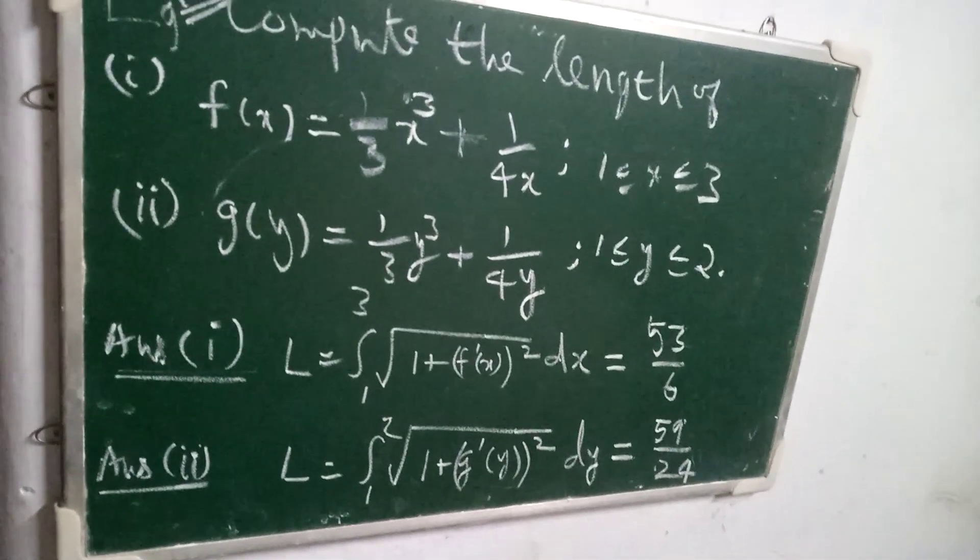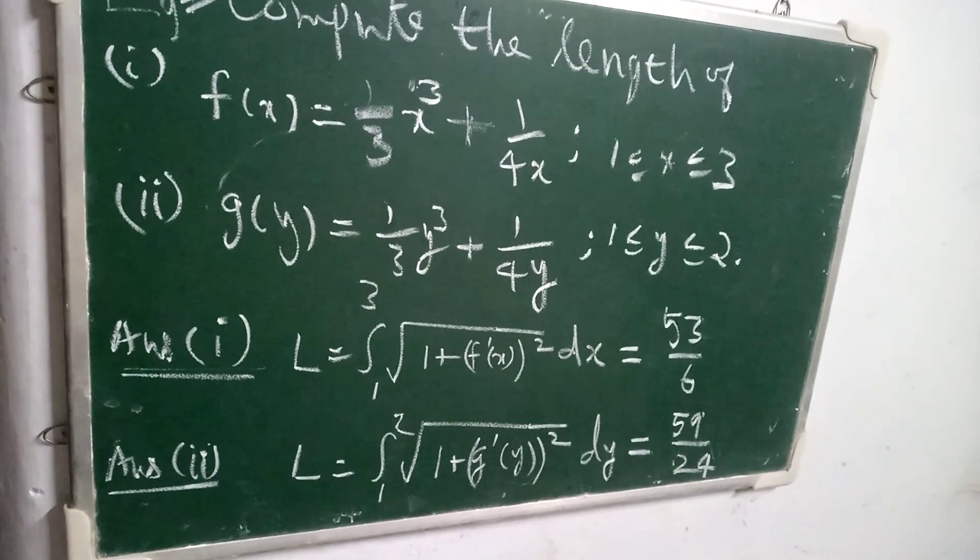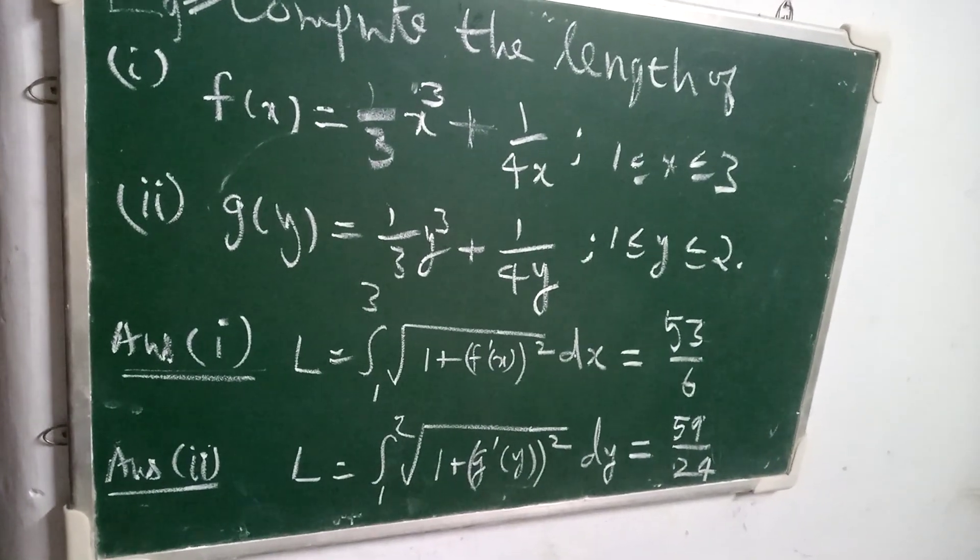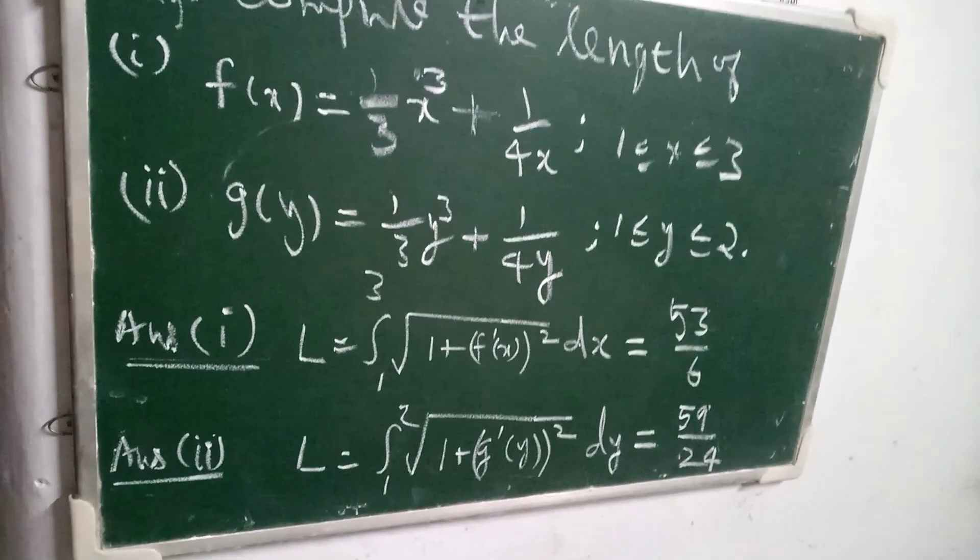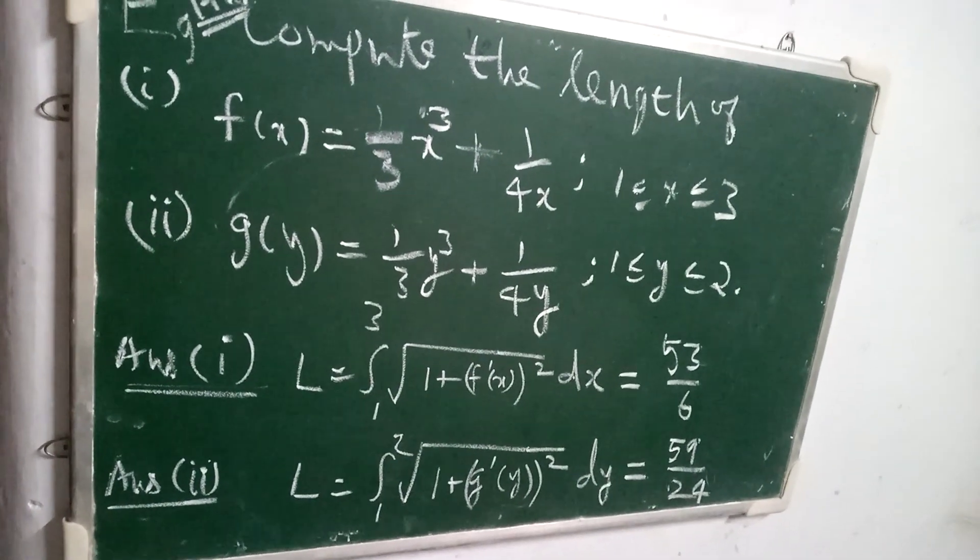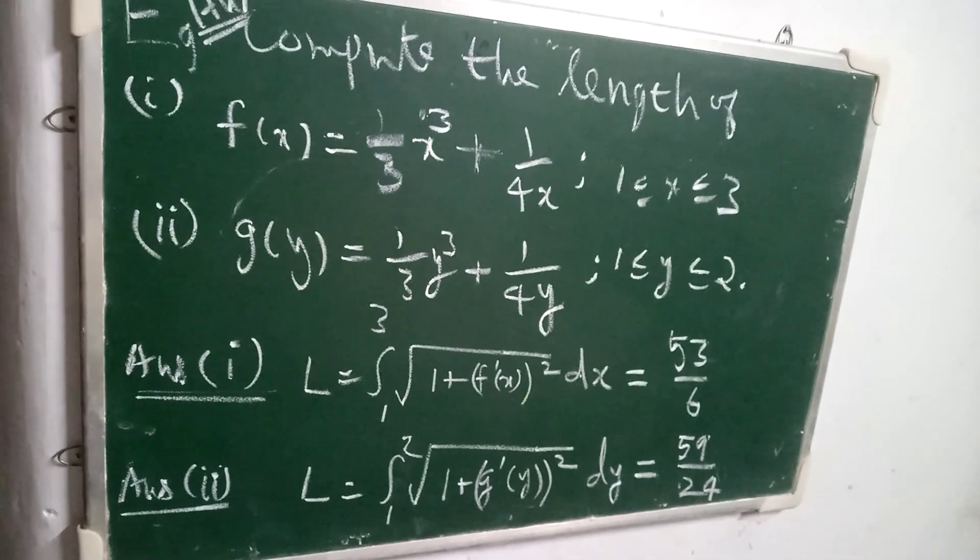And for the second problem, you will have to use length equals integral from c to d of square root of 1 plus (g'(y))² dy. And you will get the answer 59/24.